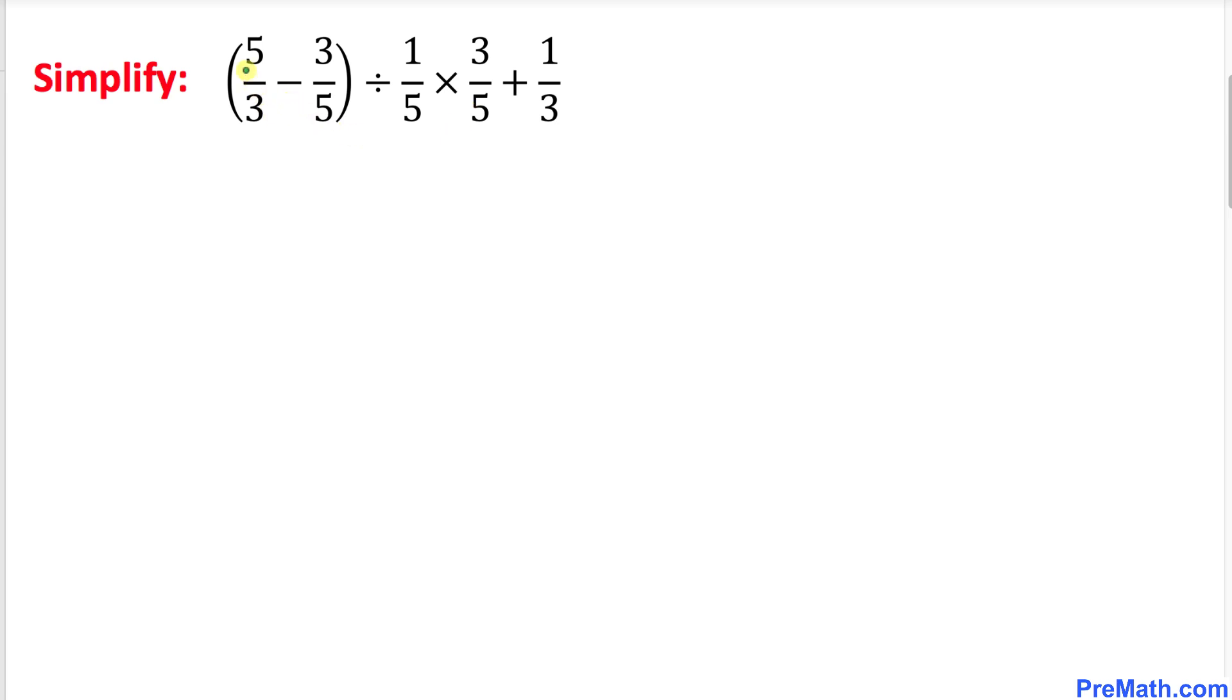Here's our problem: inside this bracket we got 5/3 minus 3/5, and then divided by 1/5 times 3/5 plus 1/3.